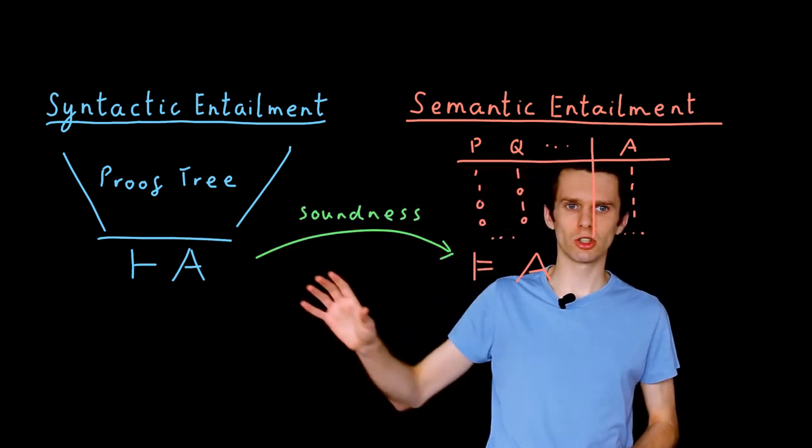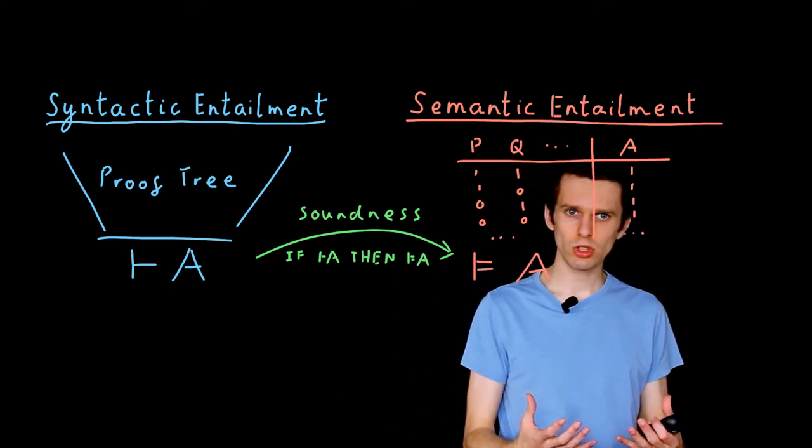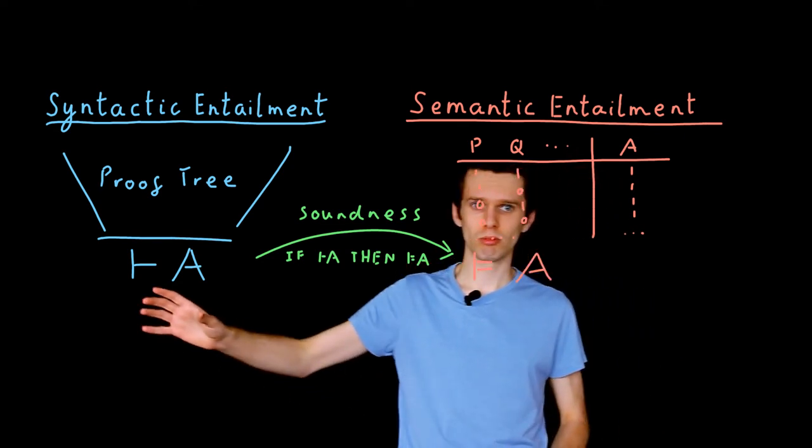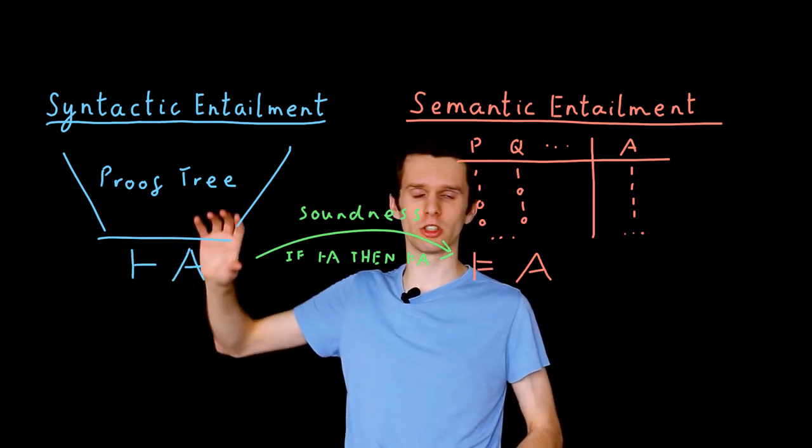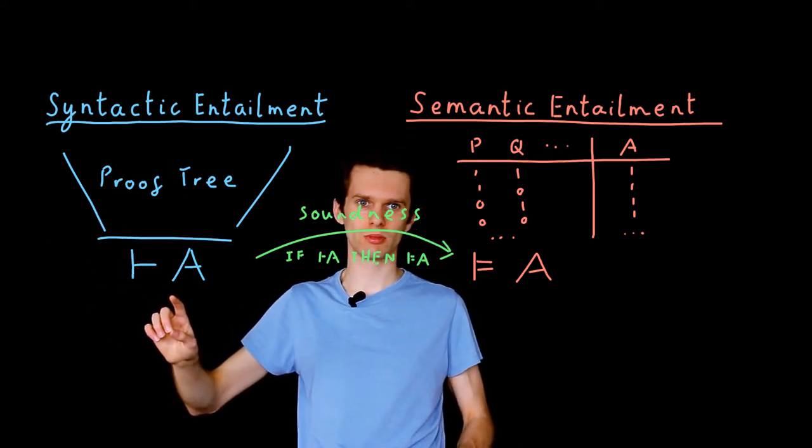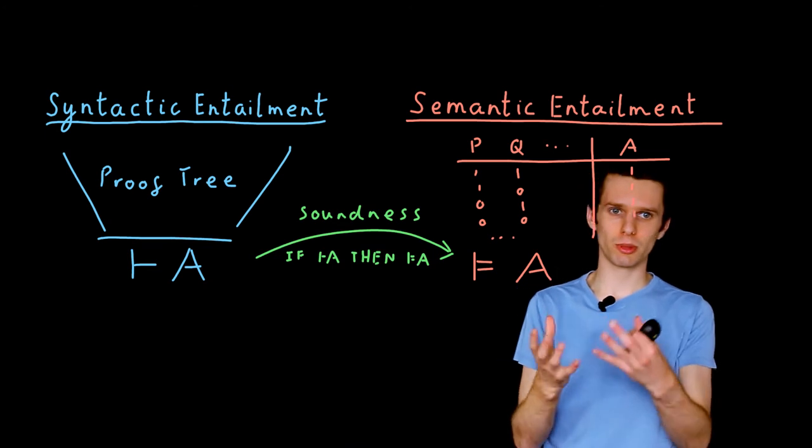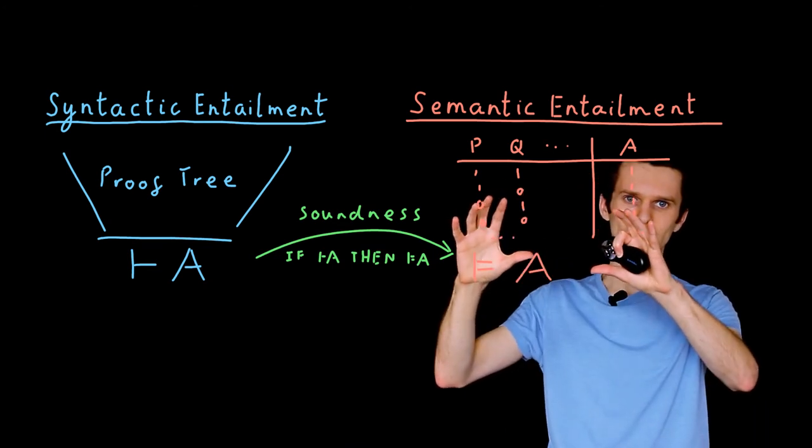The first of these is called soundness. So our logic is sound if when we can show something is true via a proof tree, when we construct a proof tree which leads to syntactic entailment, then that proposition is also true in the semantics. It is also valid.